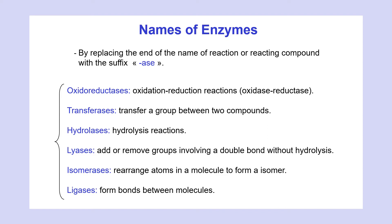Pepsin and trypsin are enzymes that catalyze the hydrolysis of proteins. There are six classes of enzymes: oxidoreductase, transferase, hydrolase, lyase, isomerase, and ligase. Oxidoreductase enzymes catalyze oxidation-reduction reactions. Transferase enzymes transfer a group between two compounds. Hydrolases catalyze hydrolysis reactions. Lyases add or remove groups involving a double bond without hydrolysis. Isomerases rearrange atoms in a molecule to form an isomer. Ligases form bonds between molecules using energy.